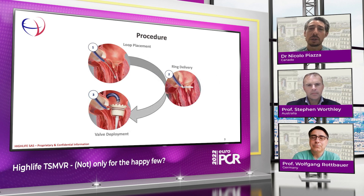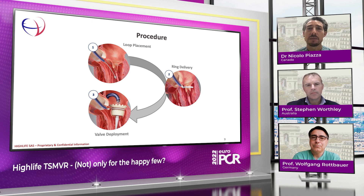In order to perform the procedure, we need to perform three important steps: move across the aortic valve and obtain loop placement around the mitral valve leaflets, followed by ring delivery over the looping guidewire, and finally we deploy a valve across the ring.